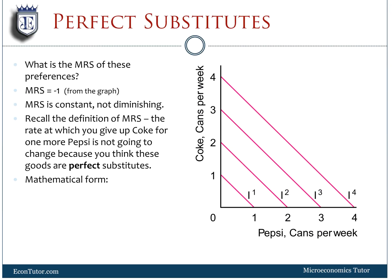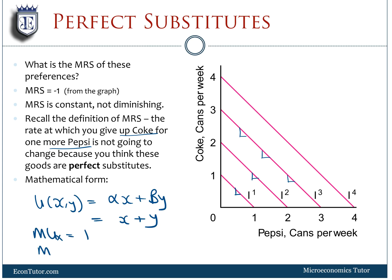The first exception is perfect substitutes. The MRS here is just negative one and stays constant — the slope is the same everywhere. It's constant because the rate at which you give up Coke for one more Pepsi doesn't change since you treat them as perfect substitutes. The mathematical form is αX + βY. In this case MUX equals one, MUY equals one, so MRS equals negative one. This plus sign indicates a straight line, meaning the slope stays constant.